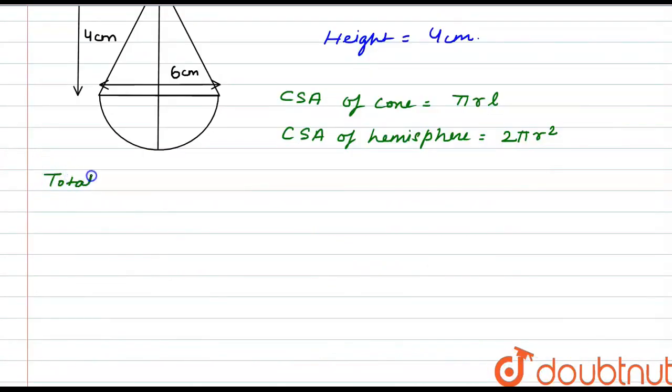The total area to be painted will be curved surface area of cone plus curved surface area of hemisphere. The curved surface area of cone is πrl and the curved surface area of hemisphere is 2πr².